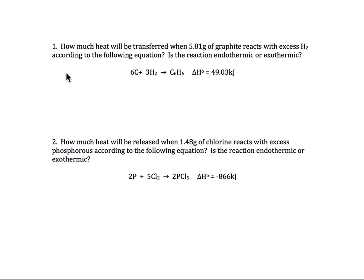Let's look at problem number one. Problem number one says we have 5.81 grams of graphite that reacts with hydrogen gas. We can see that it's 6 moles of carbon, that's the graphite, reacted with 3 moles of the hydrogen gas in order to produce 1 mole of C6H6.